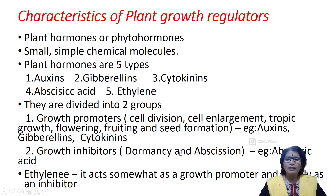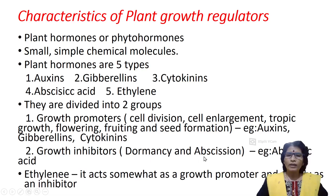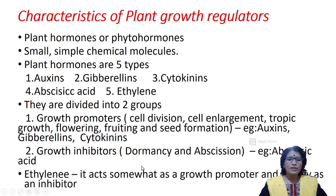Growth inhibitors include abscisic acid. Its activities include dormancy and abscission. Dormancy means resting period — after seed formation, some seeds undergo a resting period due to unfavorable conditions and are unable to germinate. Abscission means the falling off of leaves, flowers and fruits. These activities are caused by abscisic acid. Ethylene acts somewhat as a growth promoter but mostly as a growth inhibitor.